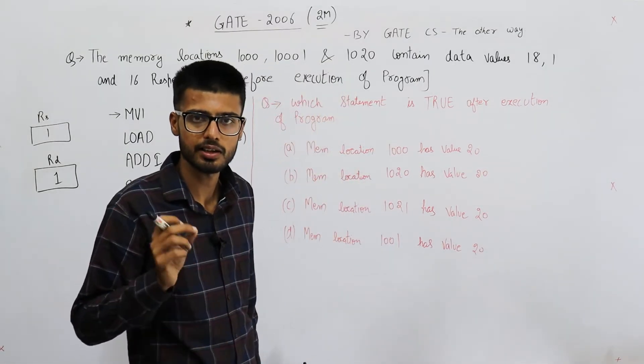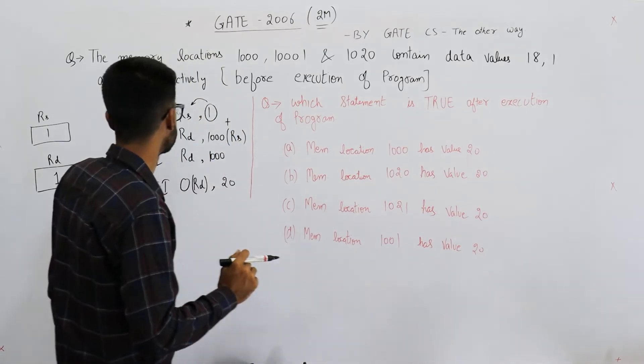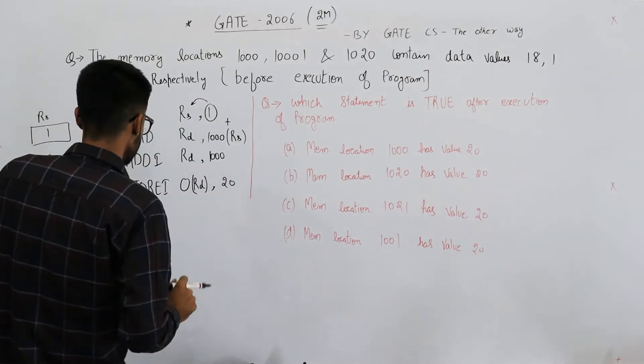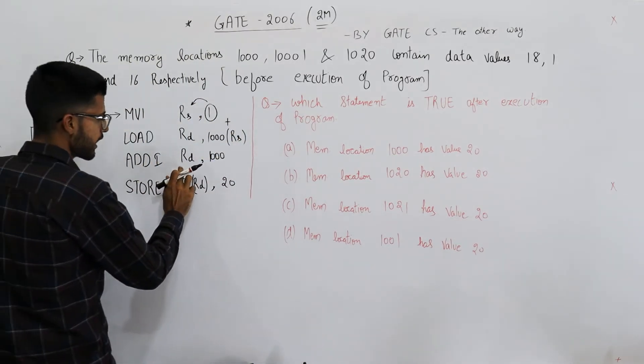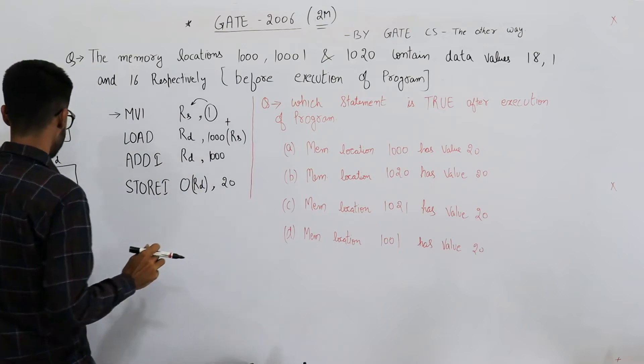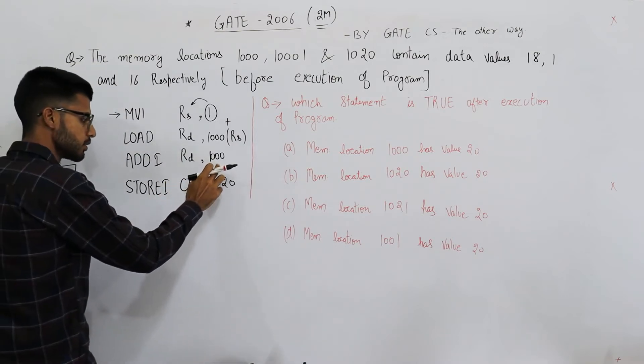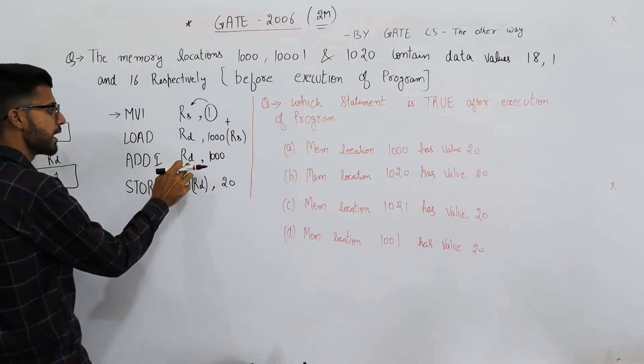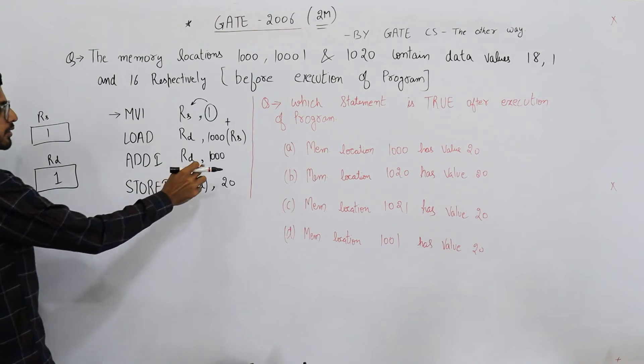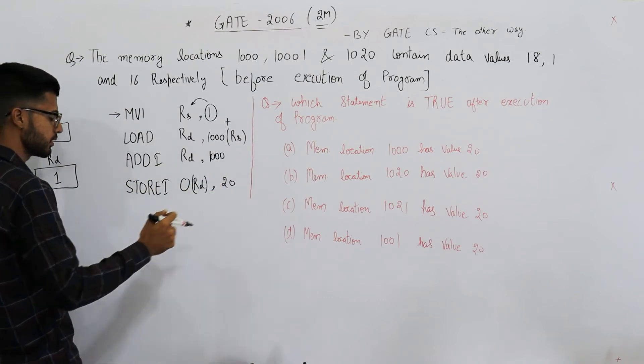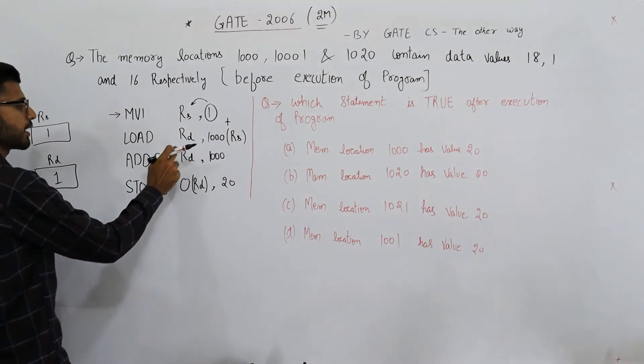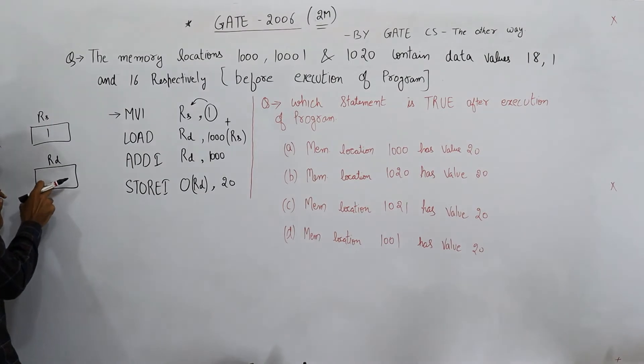Immediate means the bits immediately next to the opcode are our data. So here data is 1000. That means whatever is contained in this register Rd, add 1000 to it and save it back into Rd. That means 1 plus 1000 is 1001, and we need to save it back into this register Rd. So earlier this was 1, now it gets updated to 1001.